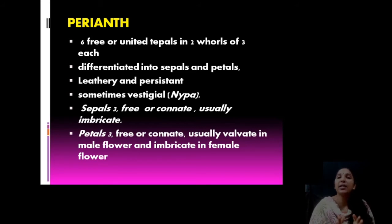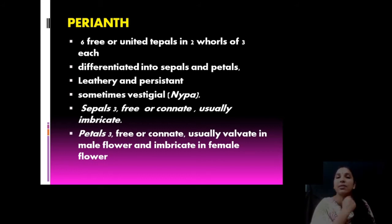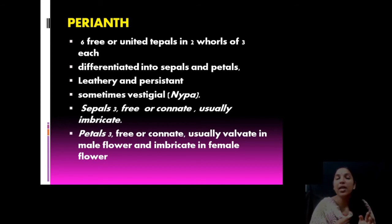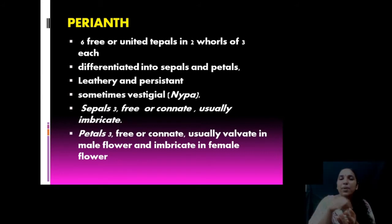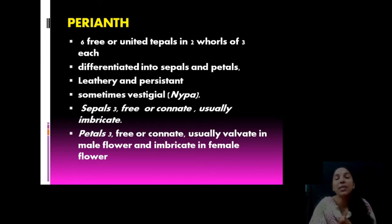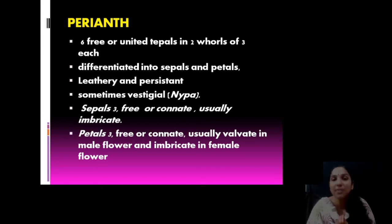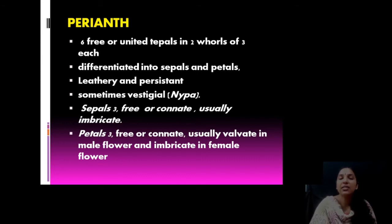Regarding the perianth — it has 6 free tepals, though united condition is also present. Two whorls: outer 3 and inner 3. You cannot easily distinguish sepals and petals. They are leathery and persistent — when you take a coconut, you can see 3 structures remaining at the base, which is the persistent perianth — a very hard structure. Sepals are free with usually imbricate aestivation. Petals are 3, free or connate, usually valvate in aestivation.